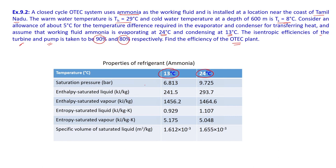The properties of the refrigerant ammonia at two temperatures — 13 degrees Celsius and 24 degrees Celsius — are given. Saturation pressure at 13 degrees Celsius is 6.813 bar, and at 24 degrees Celsius it is 9.725 bar. Enthalpy at saturated liquid and saturated vapor, entropy at saturated liquid and saturated vapor, and specific volume of saturated liquid at both temperatures are all given.